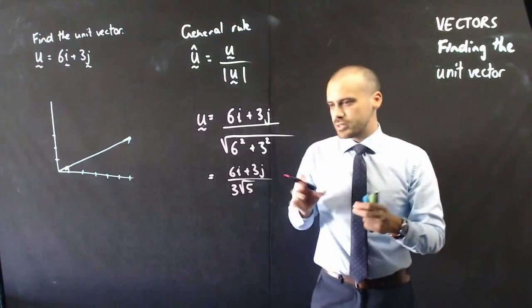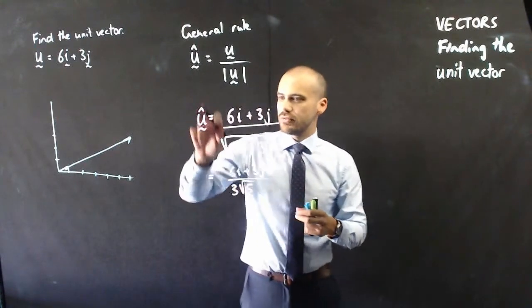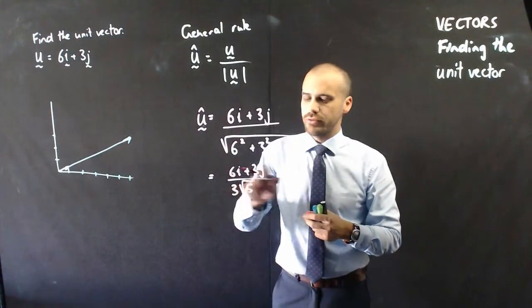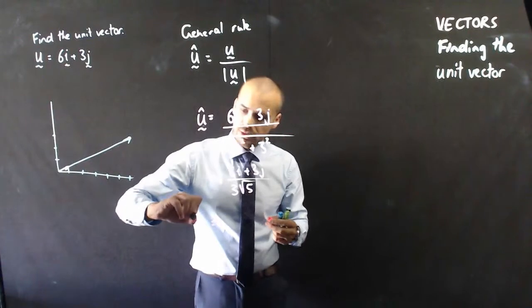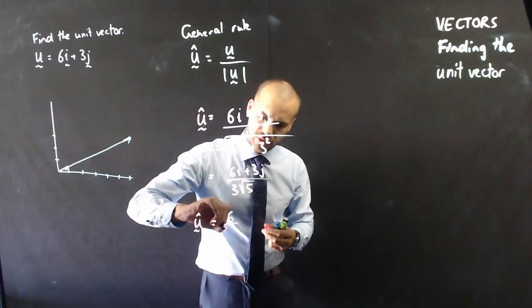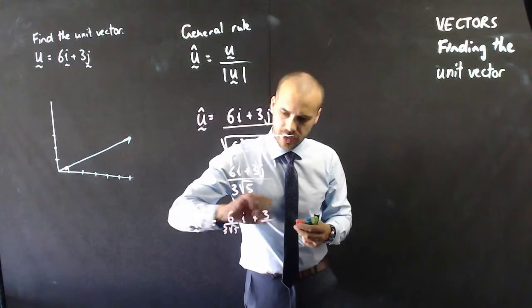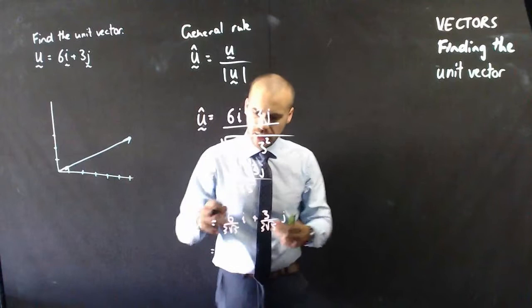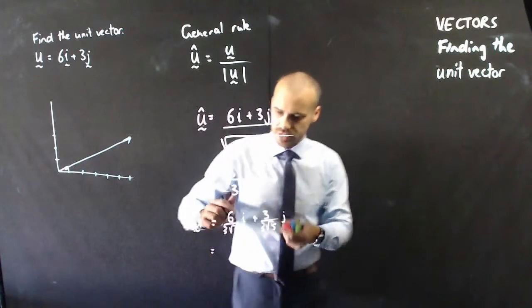So, I can now say that, well, I should be using a little hat there. The unit vector of u is equal to 6i plus 3j on 3 root 5. Generally, we like to express it a little like this: 6 over 3 root 5i plus 3 over 3 root 5j. That has the added bonus of allowing us to sort of simplify a little bit of stuff.